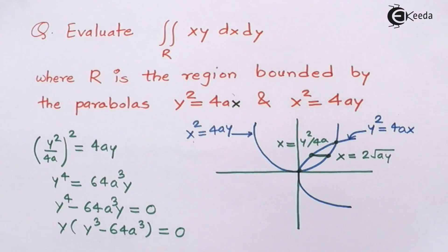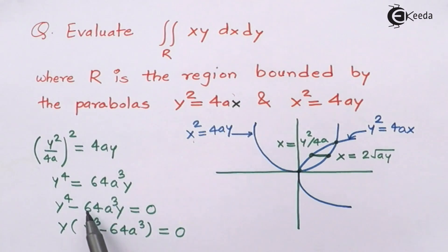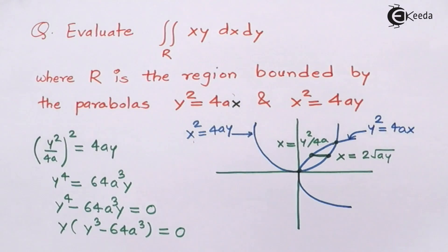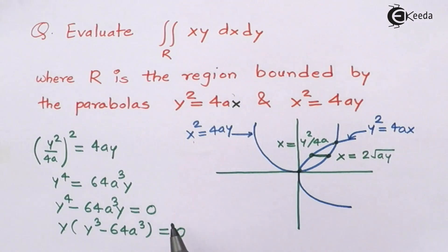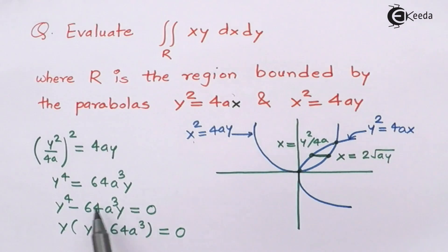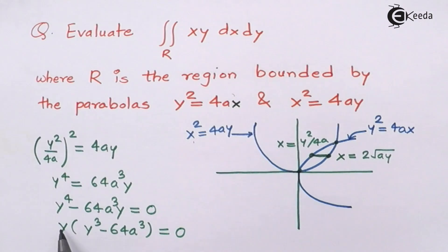A common mistake is to move 64a³y to the right side and cancel y from both sides, giving only y³ = 64a³ and one intersection point. Do not cancel any variable — instead factor to find all intersection points. Keeping y factored out gives y = 0 or y³ = 64a³.